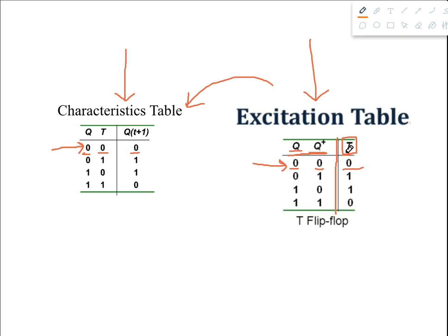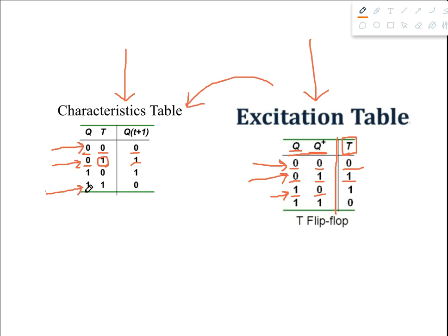For the next row, present state is 0 and next state is 1; we find that combination in the characteristic table and the value of T is 1, so we write 1. Then for present state 1 and next state 0, we find that specific combination and the value of T is 1, so we write 1 here. For the last row, where both present and next state are 1, we find the combination and the value of T is 0, so we write 0.